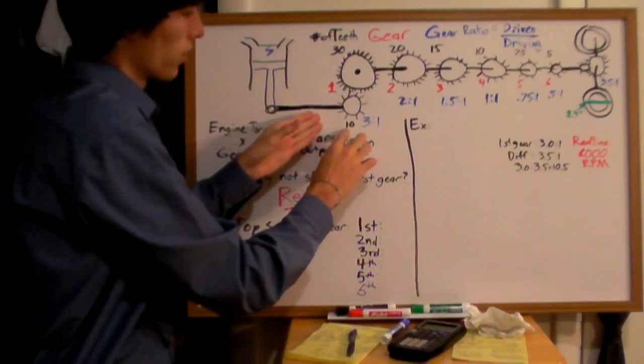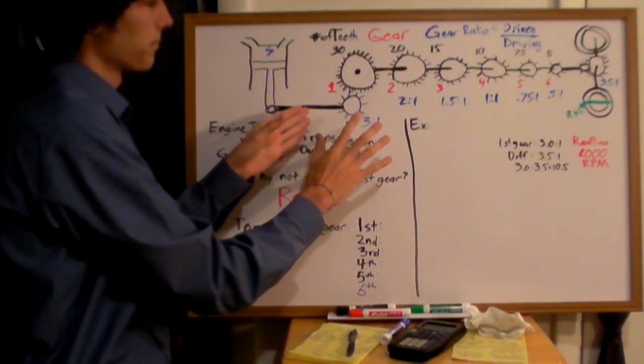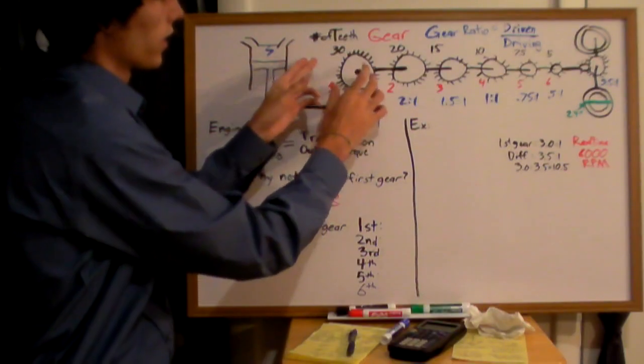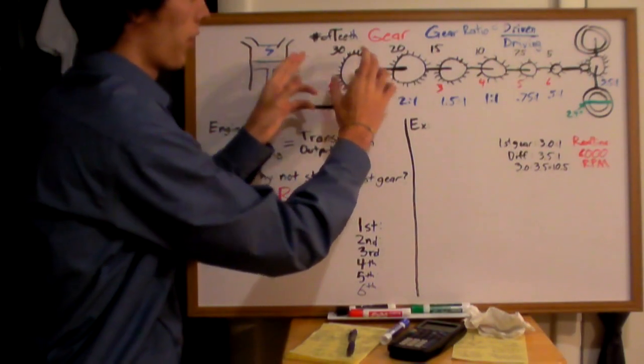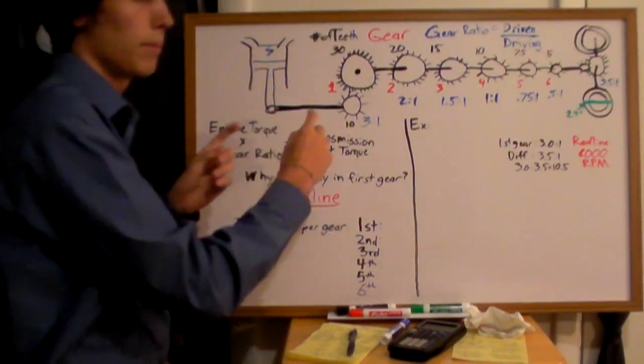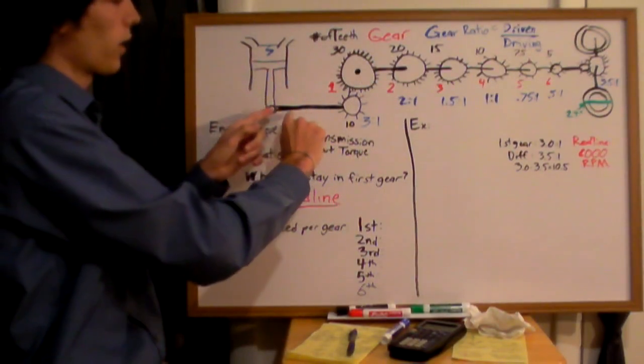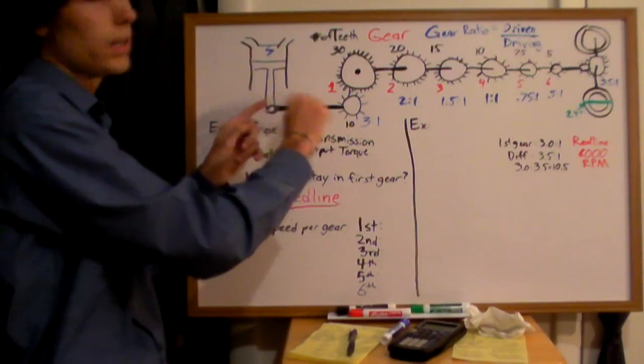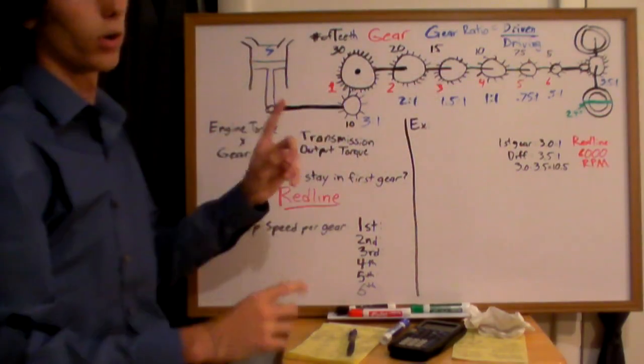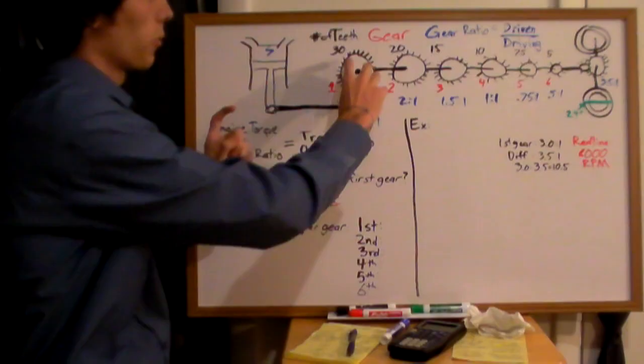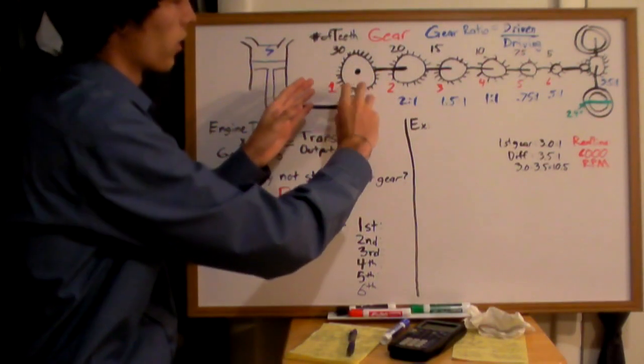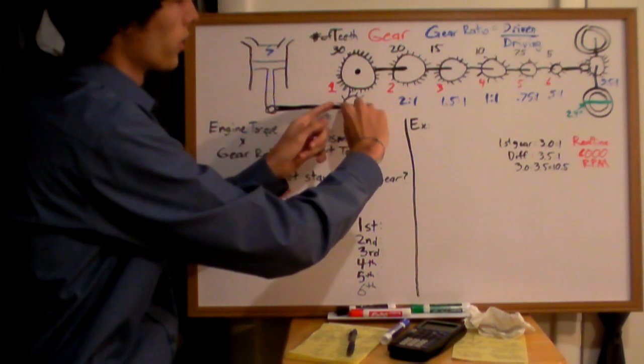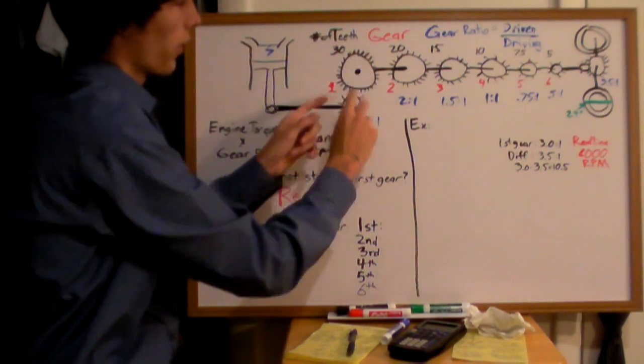So our driving gear, let's say, has 10 teeth on it. This gear is connected to a gear in the transmission with 30 teeth. So what that means is every time this crankshaft rotates three times, the transmission itself will rotate only once, and that's because of this gear ratio. It's smaller, it's going to rotate one full revolution of this, and this is only going to rotate one third of the way.